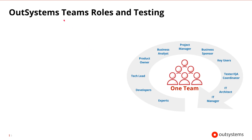What are the typical OutSystems team roles, and how are they related to testing? In a project, a lot of different types of people can be involved: from experts to developers, a tech lead and a product owner, business analysts, project managers, sponsors and key users, testing or QA coordinators, and IT architects and managers.